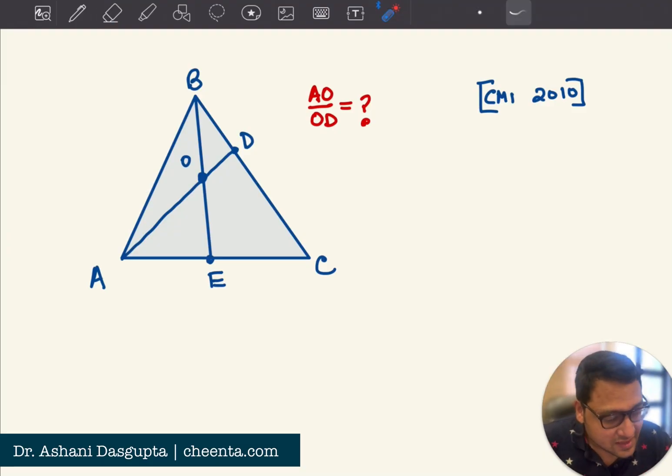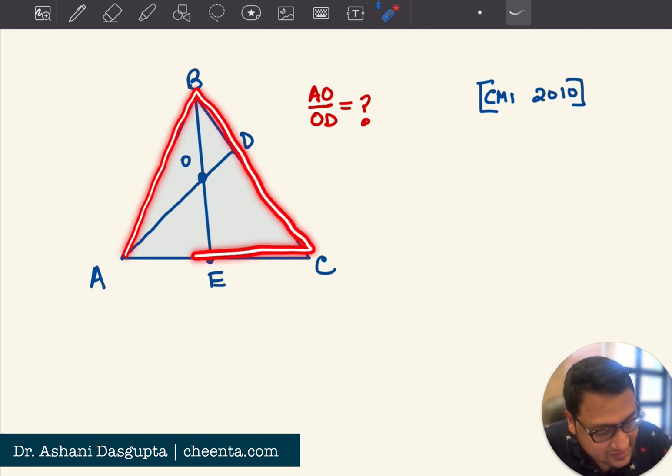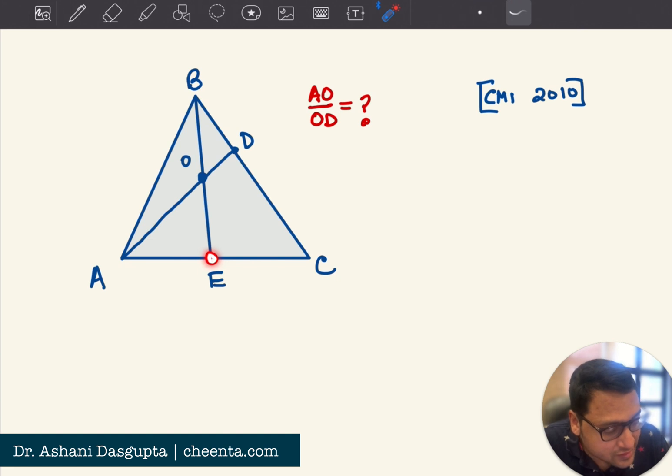This particular problem says that we have a triangle ABC, this is any triangle, and E is the midpoint of AC. So, BE is the median, and a median.